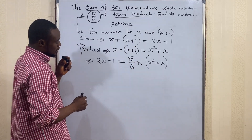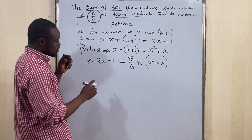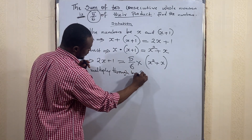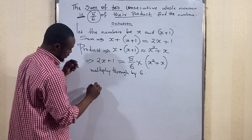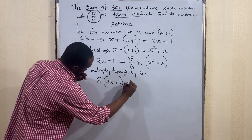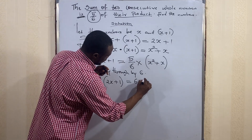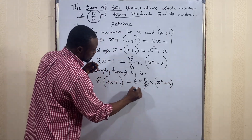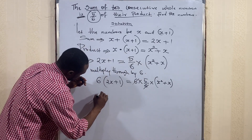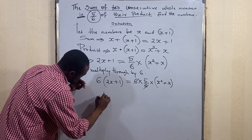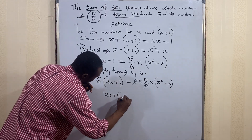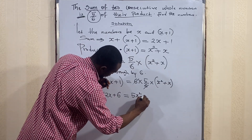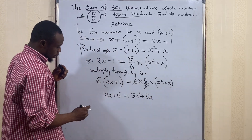To remove the fraction, we multiply through by 6. Six multiplies both sides: 6(2x + 1) = 6 × (5/6)(x² + x). The 6 cancels with the 6 in the denominator, giving us 12x + 6 = 5(x² + x), which expands to 12x + 6 = 5x² + 5x.